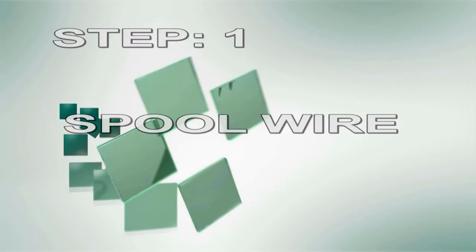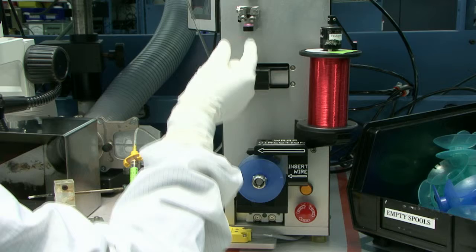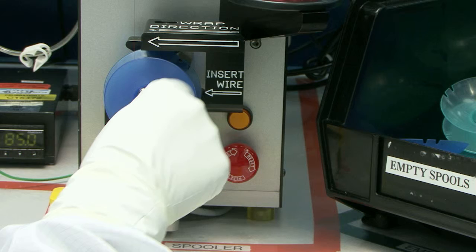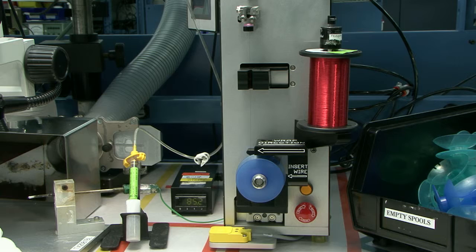Step 1. Spool wire. For our first step, slide one spool onto the spooling shaft and rotate until it clicks into place. Pull the wire taut and wrap it counter-clockwise around the spool. Then secure the wire, keeping it tight, into the spool notch, leaving one or two inches of wire extending out of the notch. Push the start button to start the spooling cycle.